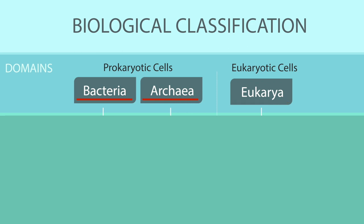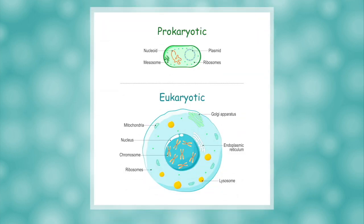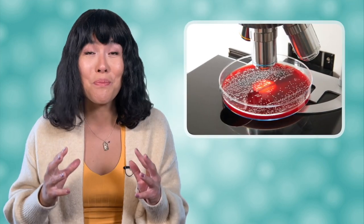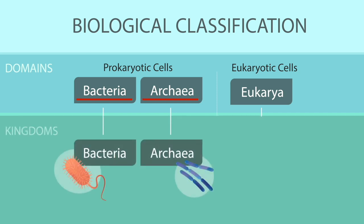The bacteria and archaea domains consist of only single-celled prokaryotic organisms. Do you remember from our unit on cells the difference between prokaryotes and eukaryotes? Prokaryotes are made of prokaryotic cells, which are small and simple. Eukaryotic cells are larger and contain complex organelles. You may not have guessed that two out of the three domains would be occupied by these small, simple creatures, but there is more biodiversity in these domains than you may realize. The bacteria and archaea domains each only have one kingdom, which shares the name of the domain — not very creative, right?